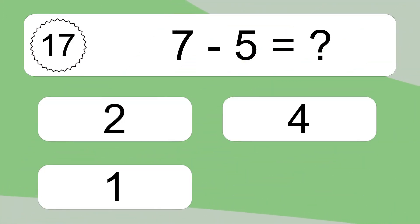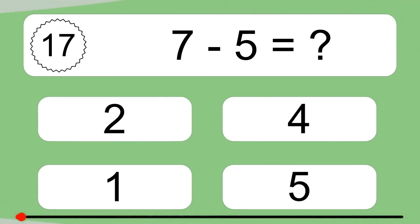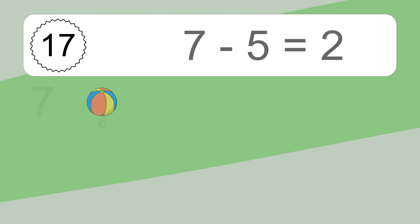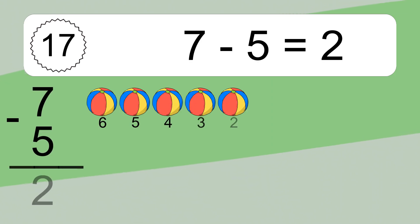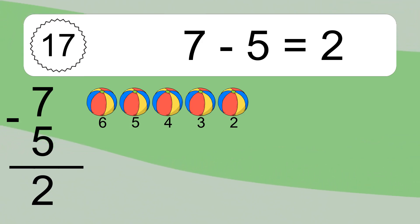7 minus 5 equals what? 7 minus 5 equals 2. Let's count it: 6, 5, 4, 3, 2.